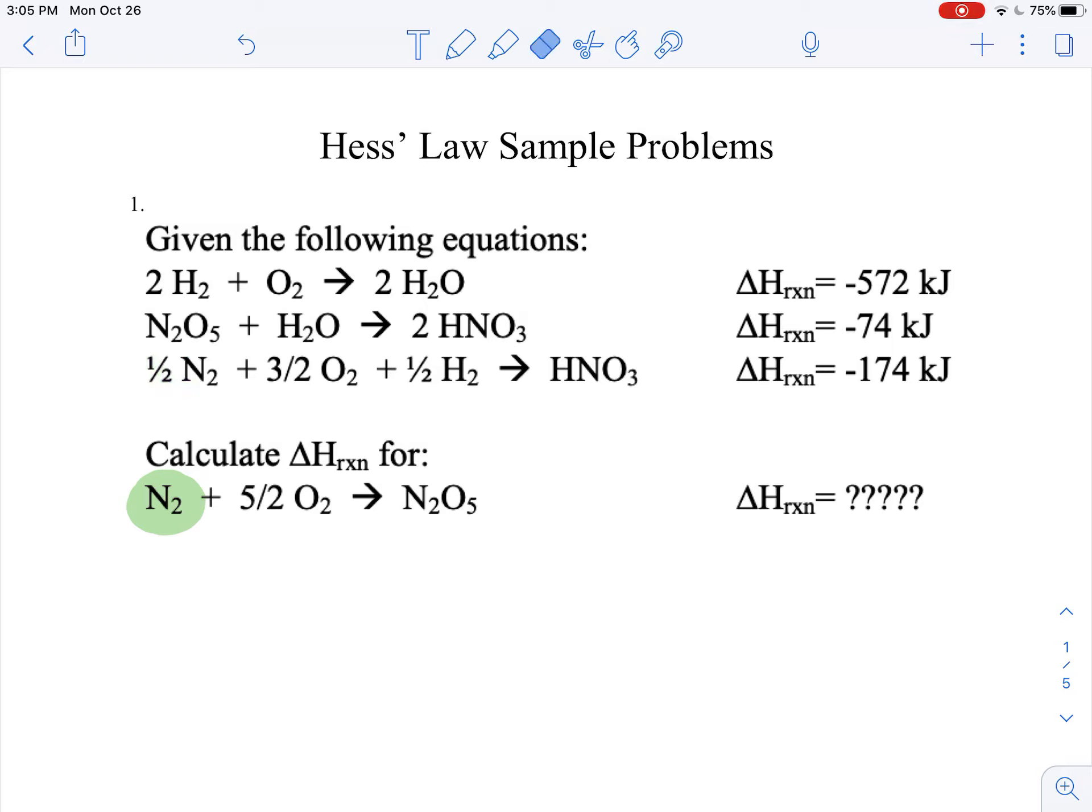So what am I going to do? I'm going to take this equation and I'm going to leave it exactly as it is, except I'm going to multiply the whole thing by two. And if I multiply this whole equation by two, then two times a half gets me my one nitrogen that I need. Two times three halves is going to get me three oxygens. Two times a half is going to get me one hydrogen here. And then two times the HNO3 is going to get me two HNO3s here.